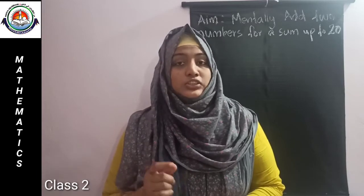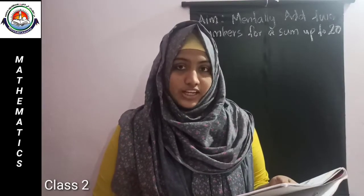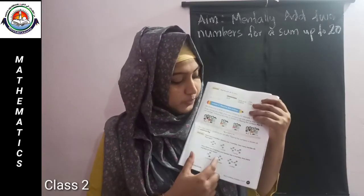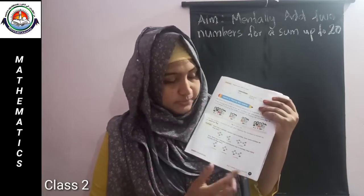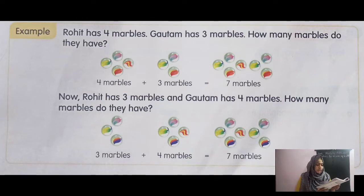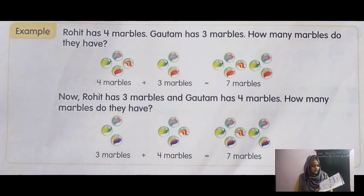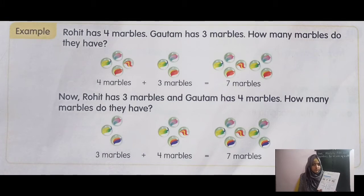So we can discuss a story like problem given in our textbook. You can see a story like problem on page number 27. I will read for you. Rohit has 4 marbles. Gautam has 3 marbles. How many marbles do they have? Rohit has 4 marbles and Gautam has 3 marbles.